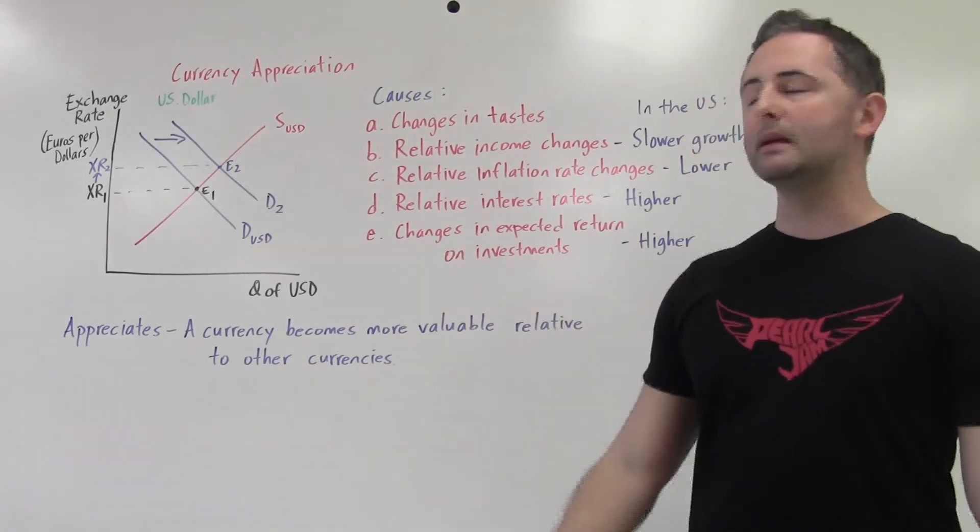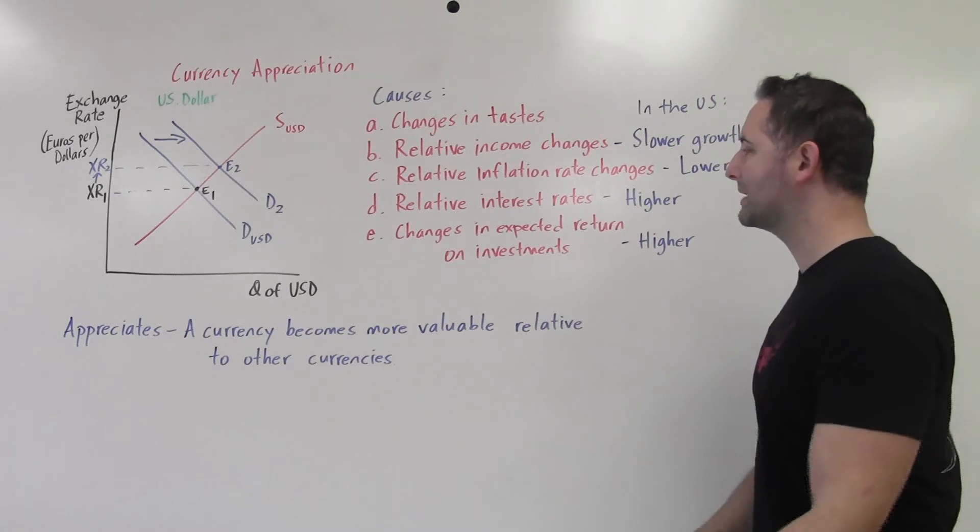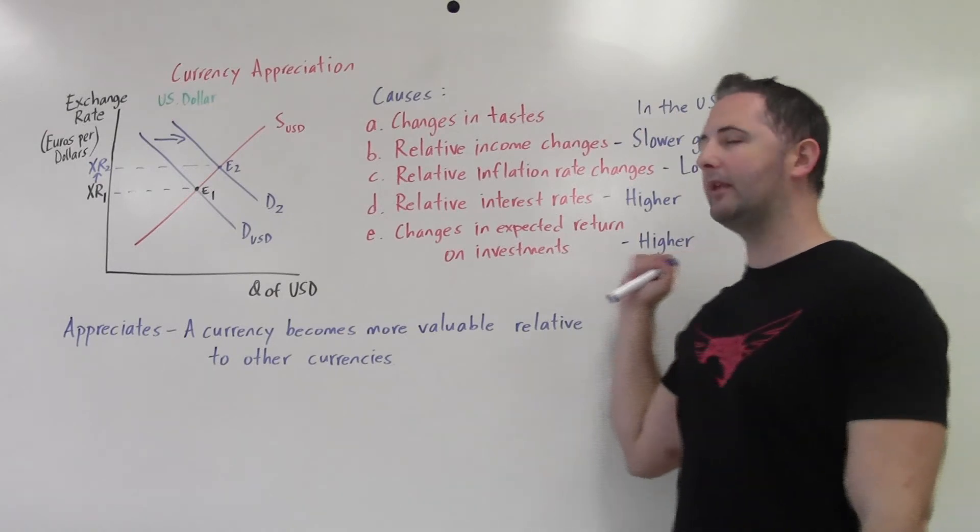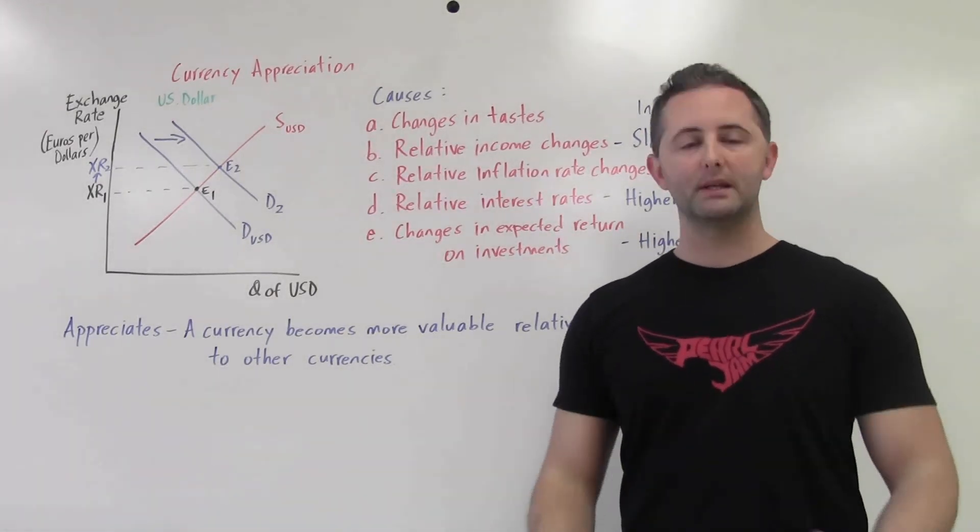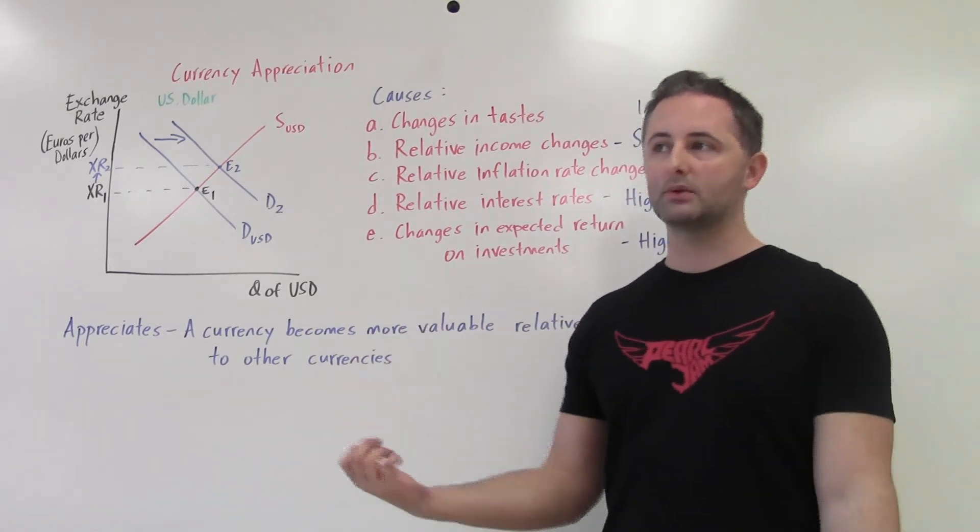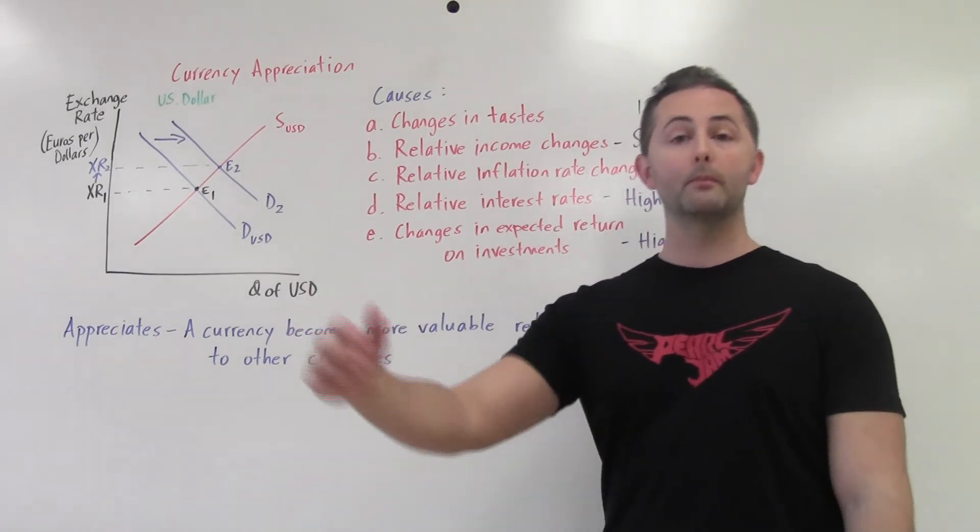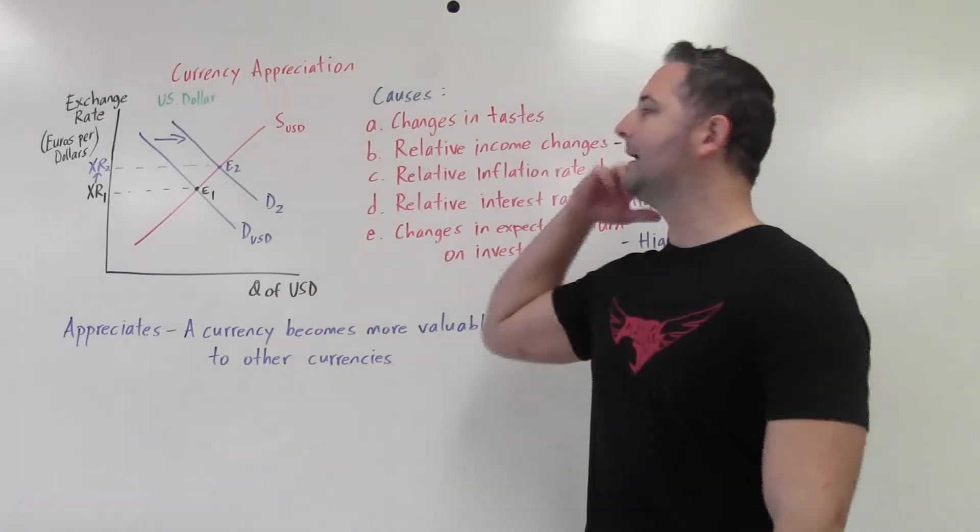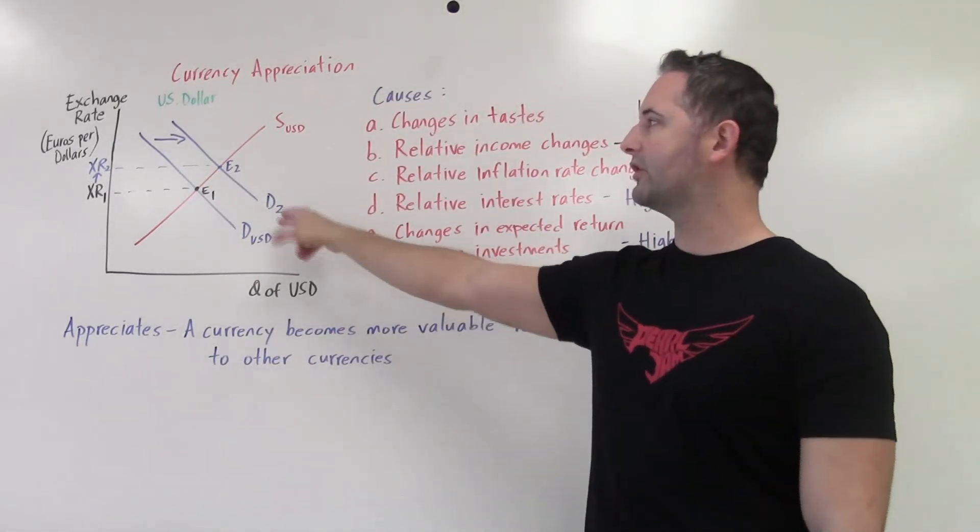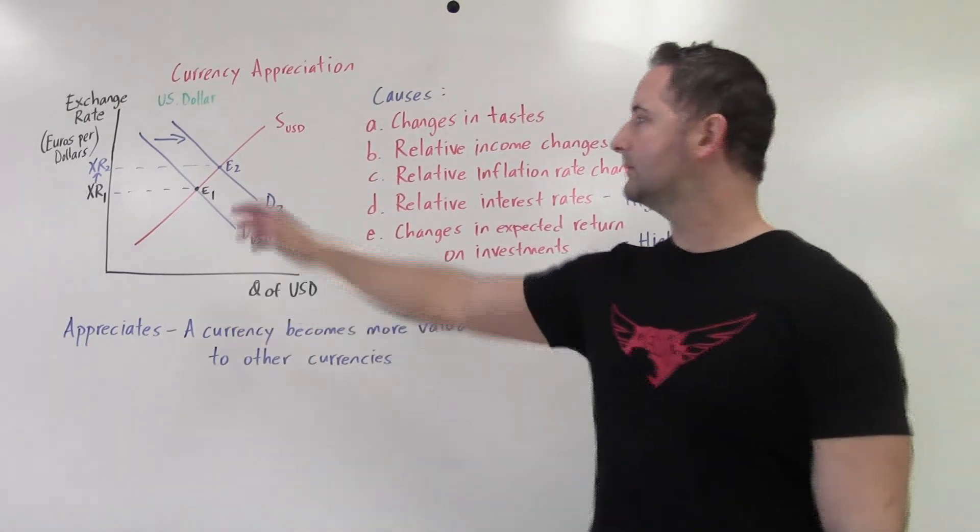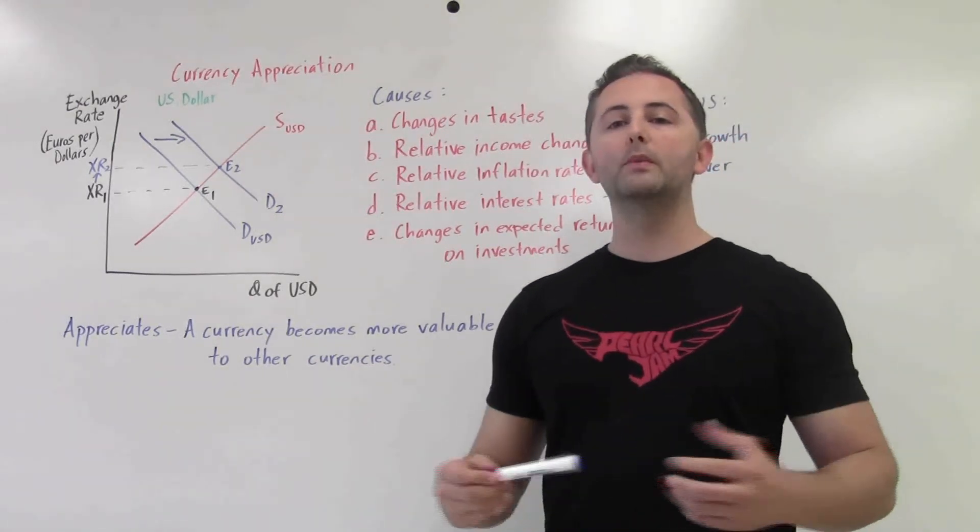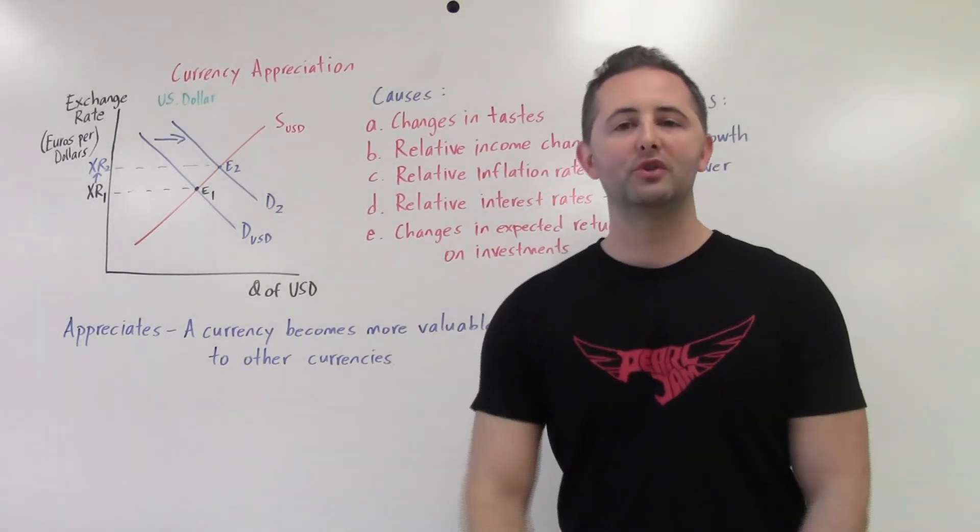And E is basically saying the same thing as D. E is saying changes in expected return on investment. So when you expect, in one country or the other, a higher return, so if we are expecting in the U.S. for whatever reason, for you to make more money on investment in the U.S. than in Europe, guess what Europeans are going to do with their money? They are going to put their money into the United States because they expect a higher investment. Again, to put their money in the U.S. requires that they change their euros to dollars. Demand for dollar increases, causing shift right, and we see the exchange rate increases, causing the dollar to become more valuable relative to the euro.